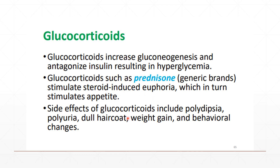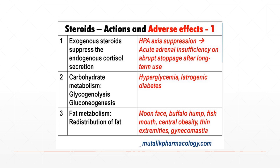Side effects of glucocorticoids include polydipsia (increased thirst), polyuria, dull hair coat, weight gain, and behavioral changes. Exogenous corticosteroids will suppress endogenous cortisol secretion, especially with long-term or chronic use. In carbohydrate metabolism, they induce glycogenolysis (breakdown of glycogen) and gluconeogenesis, leading to hyperglycemia and iatrogenic diabetes — a type of diabetes caused by drug administration such as corticosteroids. In fat metabolism, glucocorticoids promote redistribution of fat.